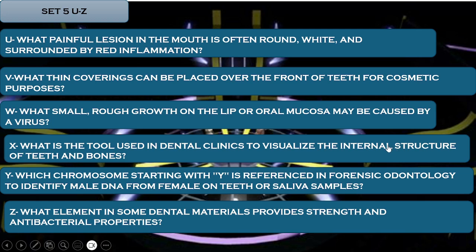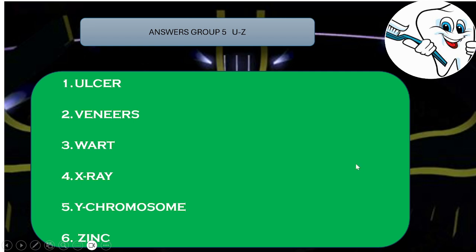Are you ready to reveal the answers for this group? Here we go: U was for Ulcer, V was for Veneer, W was for Wart, X was for X-ray, Y was for Y Chromosome, and Z was for Zinc.